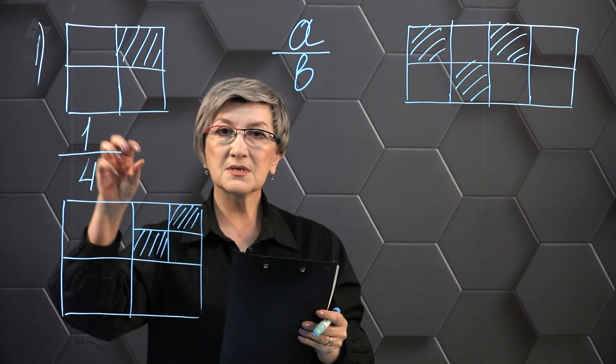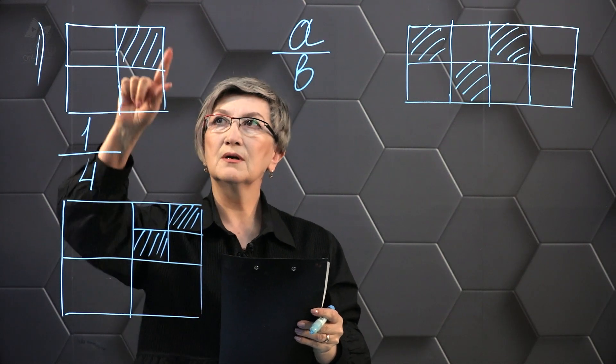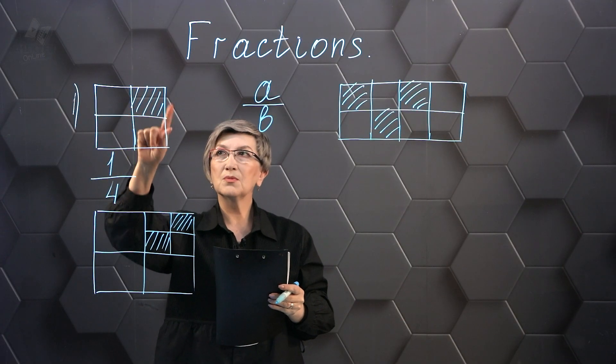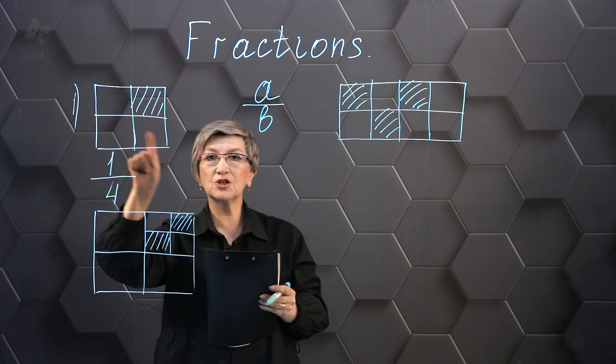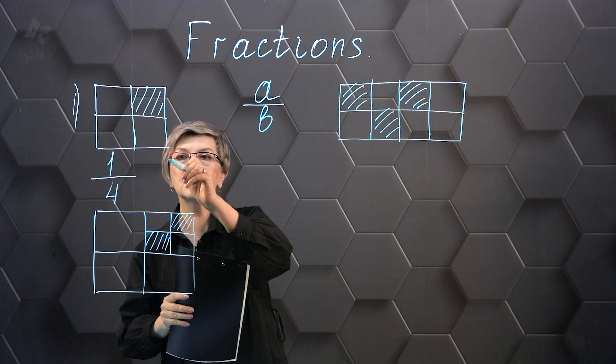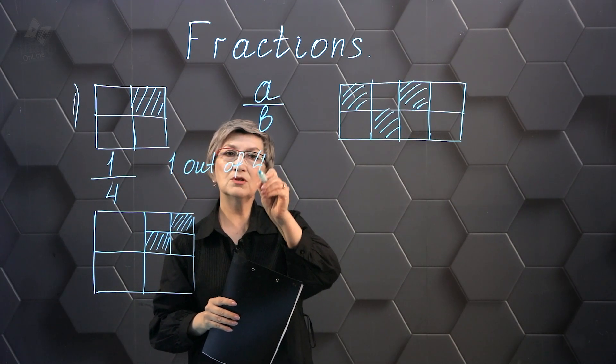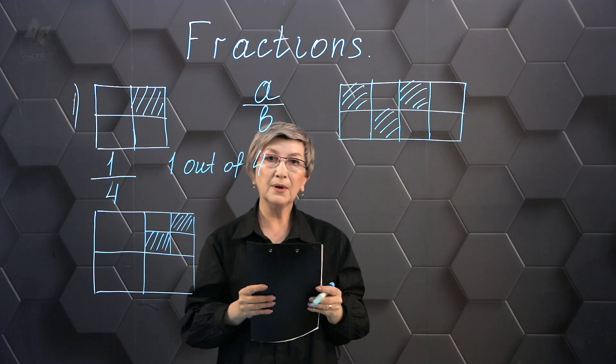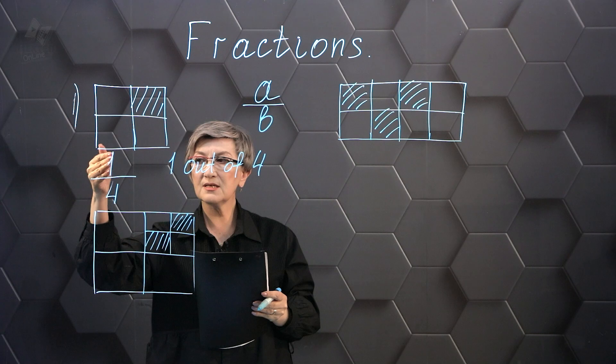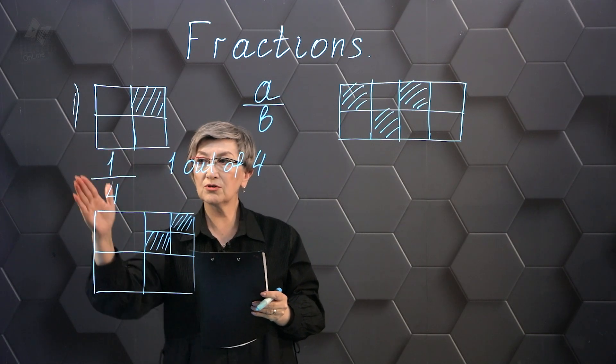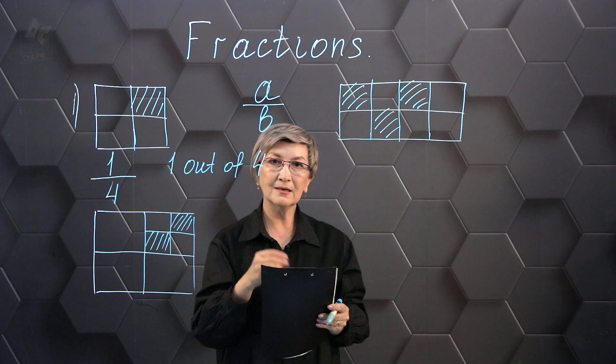You can write down this fractional number by first making another notation. Let's write it down in a different way. We can see that we have one part in four parts is shaded. So I'm going to write it down as a fractional number, one part in four. The result of that is a fractional number of one-fourth.